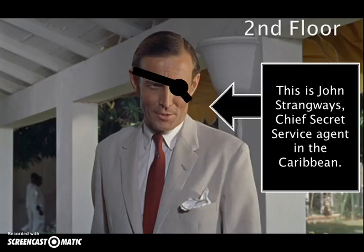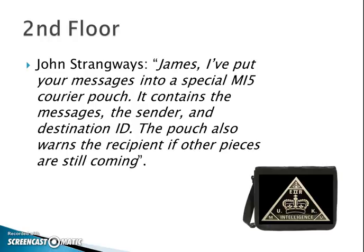This is John Strangeways — he's the chief secret service agent of the Caribbean on secondment to home base. He says: James, I've put your messages in a special MI5 carrier pouch. It contains the messages, the sender and the destination ID. The pouch also warns the recipient if other pieces are still coming.